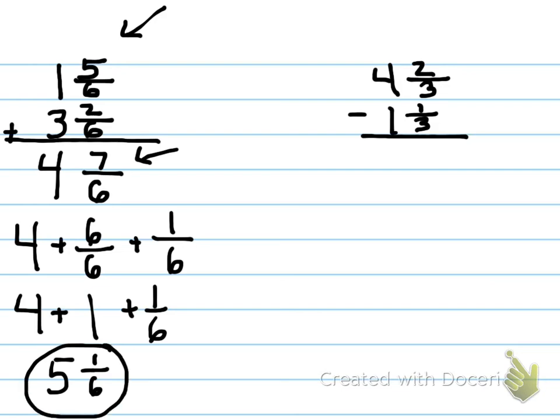Let's try a subtraction problem. Let's subtract the whole numbers. 4 minus 1 is 3. Let's subtract the numerators. 2 minus 1 is 1. Denominator stays the same, as always.